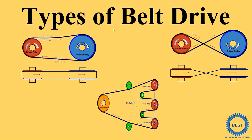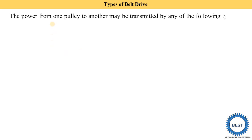In this video I explain types of belt drive. Here you see this is the driving pulley and here the driven pulley. There are a number of ways to transmit the power from the driven pulley to the driving pulley — the power from one pulley to another pulley may be transmitted by any of the following types of belt drive.